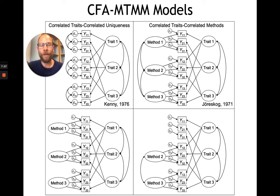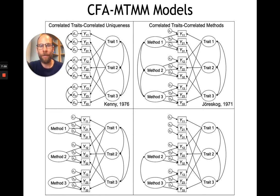Unfortunately, the correlated traits correlated methods model frequently causes issues in empirical applications. This is related to the fact that this model isn't globally identified — we have so many parameters, with correlated methods and correlated traits, making it difficult to identify in practice. This model often shows convergence problems or improper solutions, and therefore other models have been proposed that address these limitations.